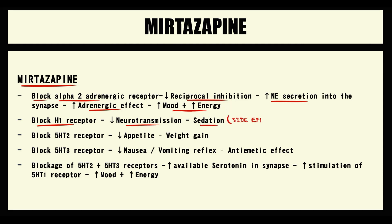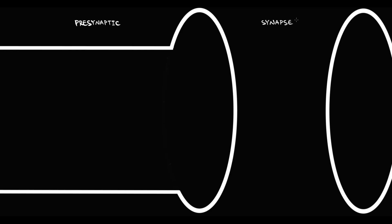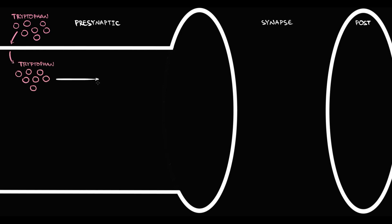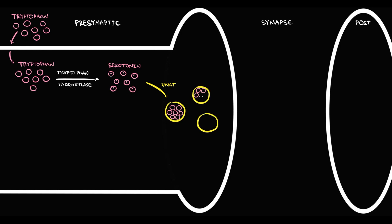We consider sedation a side effect. In addition to this, mirtazapine blocks type 2 and type 3 serotonin receptors. To explain this, we have to know how serotonin neurons work. We have a presynaptic neuron, synapse, and postsynaptic neuron. Serotonin neurons uptake tryptophan. Once tryptophan appears inside the neuron, it undergoes hydroxylation by the rate-limiting enzyme tryptophan hydroxylase, with formation of serotonin. Once serotonin is formed, vesicular monoamine transporter puts serotonin inside the vesicles, and in this form serotonin is stored inside the neuron.